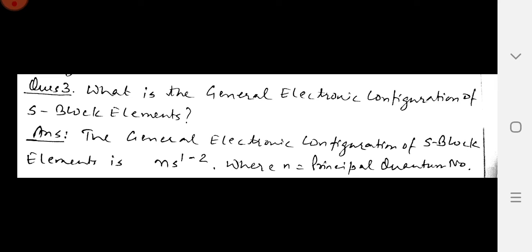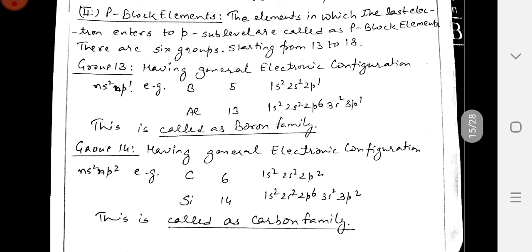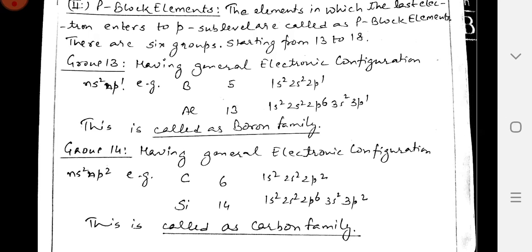The question is: What is the General Electronic Configuration of S-Block Elements? The general electronic configuration of S-block elements is NS1-2, where N is the principal quantum number. The elements in which the last electron enters the P-shell are called P-Block Elements.